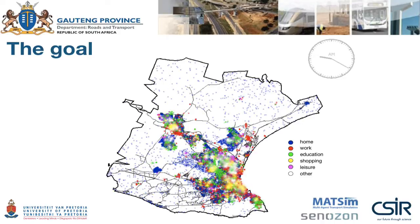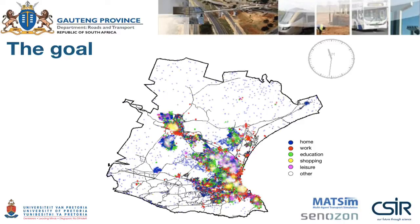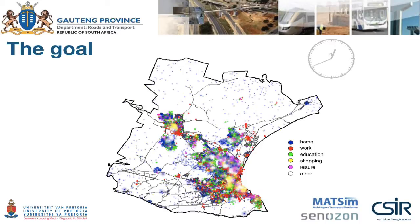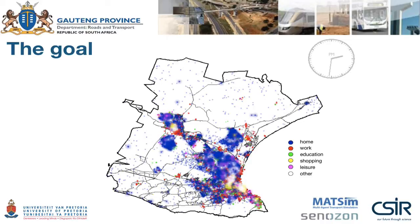Once the kids are at school, parents actually have the opportunity to get some shopping done as well. As soon as school comes out, about 1 o'clock, half past 1, education decreases significantly, and you now see a lot of home activities starting as kids arrive back home.